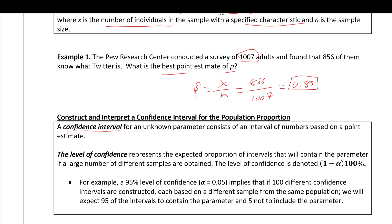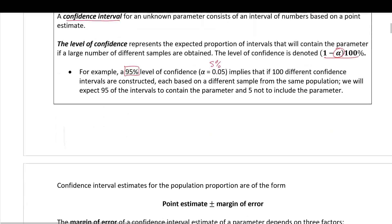Before we get into confidence intervals, we need to know the level of confidence. The level of confidence represents the expected proportion of intervals that will contain the parameter if a large number of different samples are obtained. For example, a 95% level of confidence implies that if 100 different confidence intervals are constructed, each based on a different sample, we expect 95 to contain the parameter and 5 to exclude it. Alpha is just the complement of the confidence level — for 95%, alpha is 5% or 0.05.